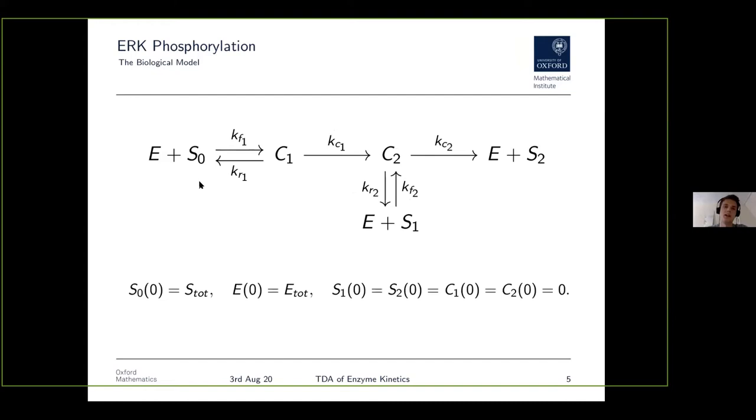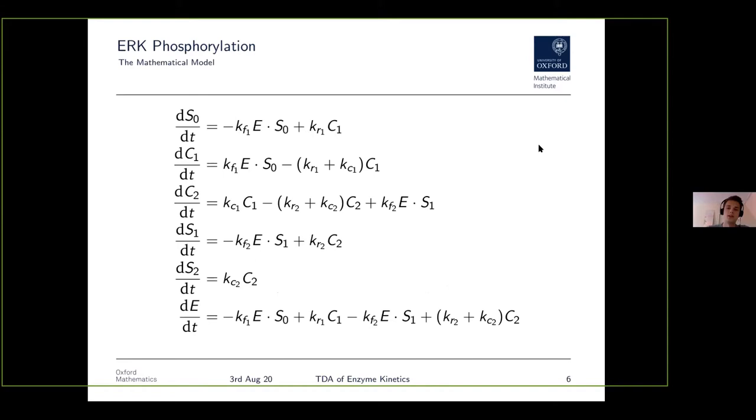The underlying reaction that happens is that we start off with ERK substrate that is phosphorylated on zero of two sites. It binds together with the enzyme to form a compound which can then catalyze at a certain rate, and this can either directly release the enzyme and some substrate that is phosphorylated on both sites, or it can first go into a state where only one of the two sites is phosphorylated and then go back into the compound state to eventually go to the state where both sites are phosphorylated.